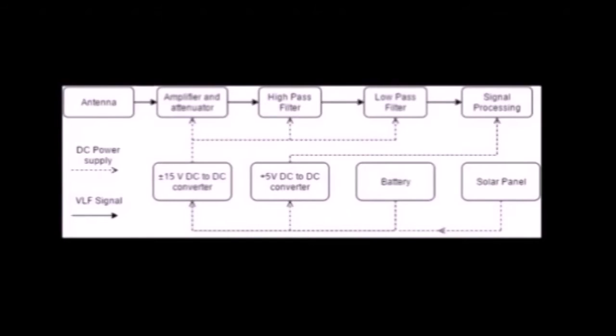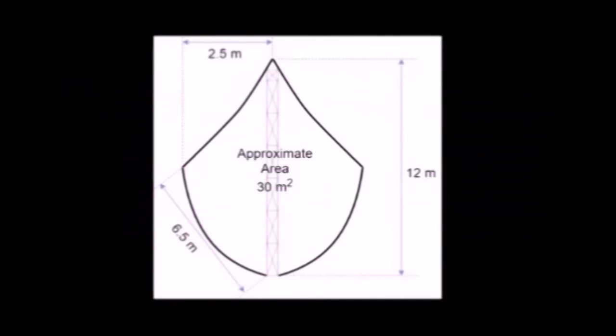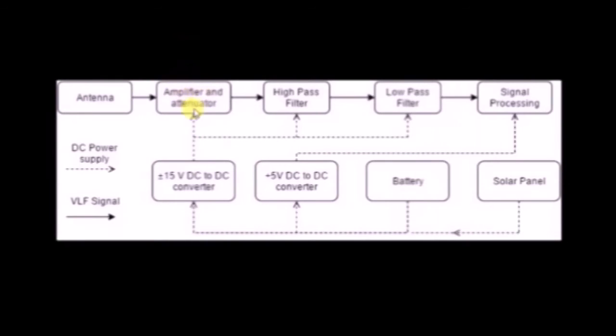The new system is similar to the old system with the main difference being that the impedance matching transformer is excluded. The signal goes straight from the antenna to the amplifier. A single loop magnetic field antenna is used with an approximate area of 30 square meters. A variable gain inverting amplifier is used to control the gain.